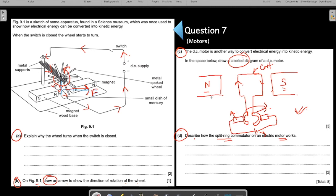If it is not a split ring commutator, if the ring is not split in between but is a continuous ring, the rotation of the motor will reverse every half cycle and this is not what we want our electric motors to do. We want our electric motors to keep turning in the same direction all the time. That's why we use split ring commutators.